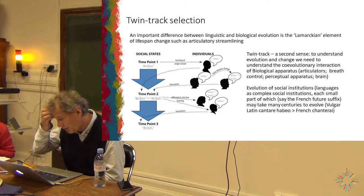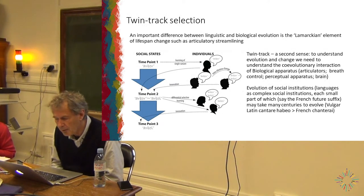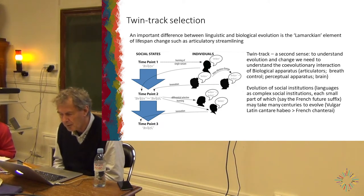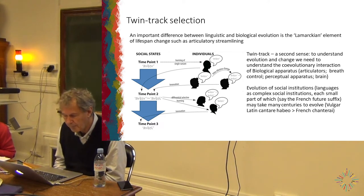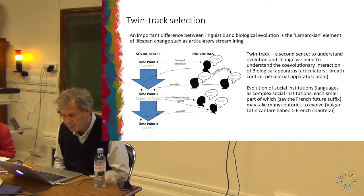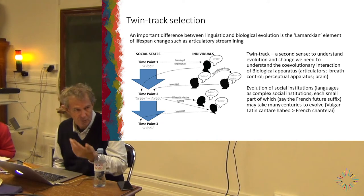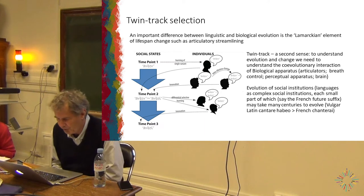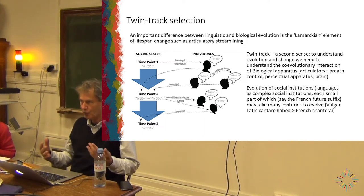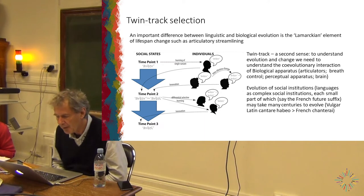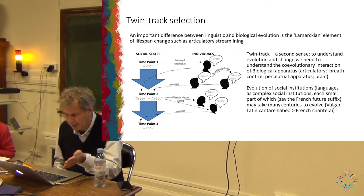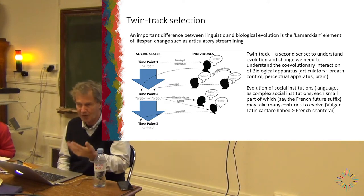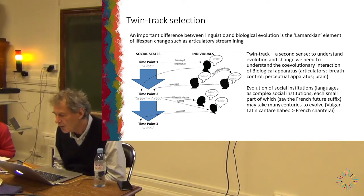This twin-track selection, shown in diagrammatic form, illustrates what might happen in an individual — the changes they introduce — and then at different time points, as what you say is learned by others, those changes gradually show up. Every linguist knows about this through historical change or grammaticalisation — for example, from Latin cantare habeo to French chanterai. That's not something happening in the course of one generation.